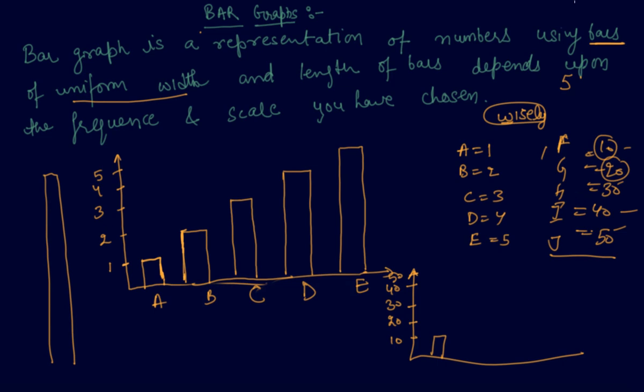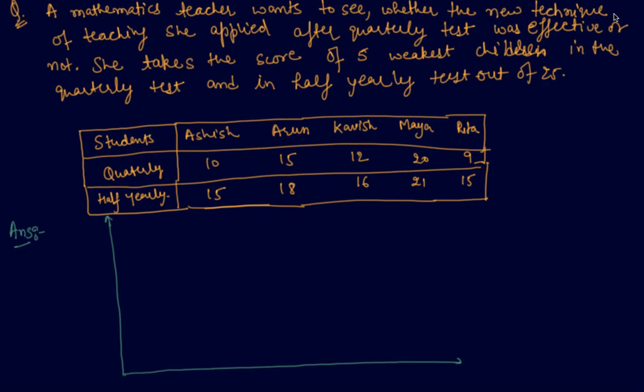Let me give you one example based on this. Here is the question which states that a mathematics teacher wants to see whether the new technique of teaching she applied after quarterly test was effective or not. And she takes the score of 5 weakest students in the quarterly test and in half yearly test.